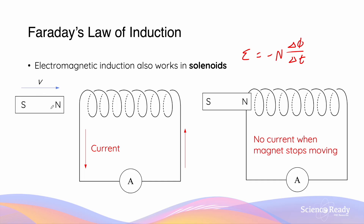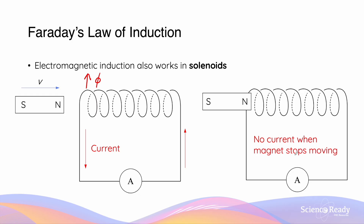For example, if the bar magnet is moved towards the solenoid at a faster velocity, this is going to result in a faster rate of flux change — greater delta phi over delta t — and that will give us an increased magnitude of EMF. When the bar magnet stops moving, there will no longer be changes in flux, so delta phi becomes zero. By Faraday's law, if there's no change in magnetic flux, there will be no induced EMF and, as a result, no current produced. So in this setting, the ammeter will produce no readings.